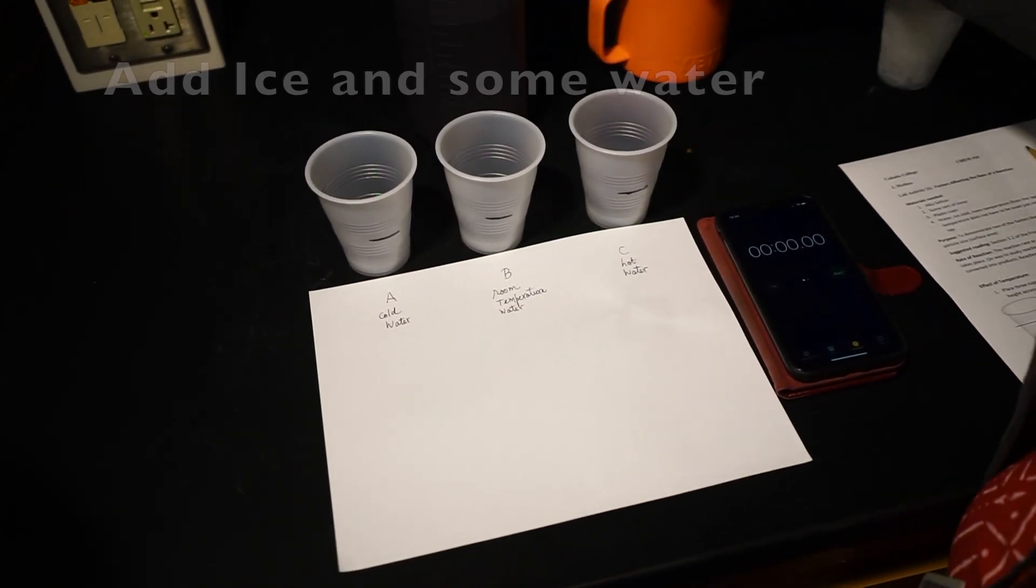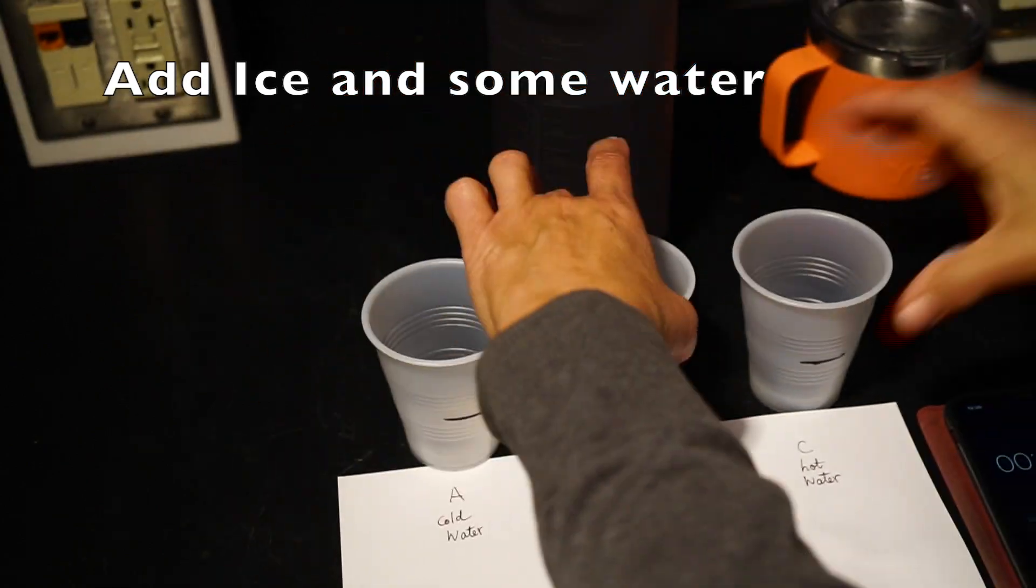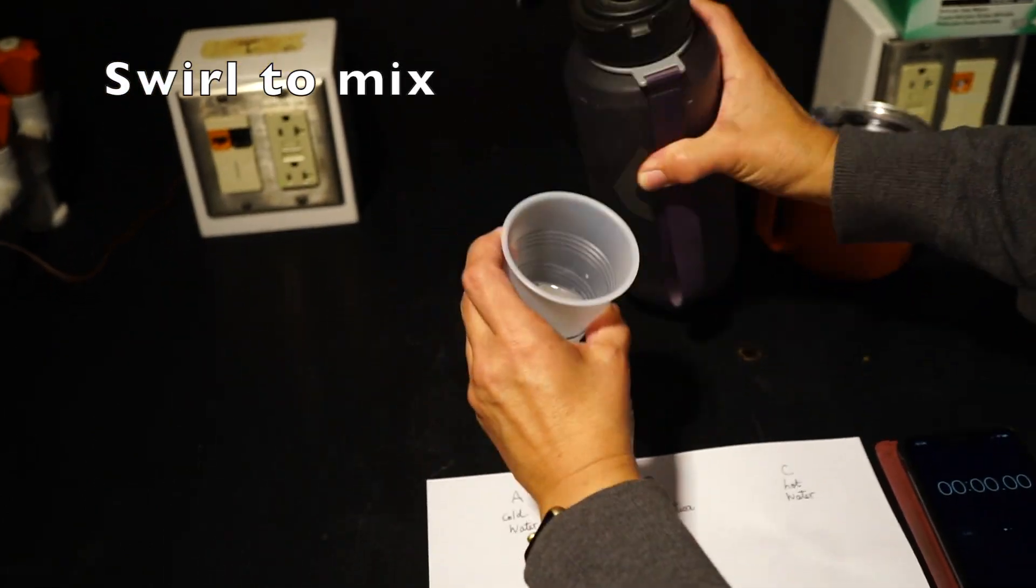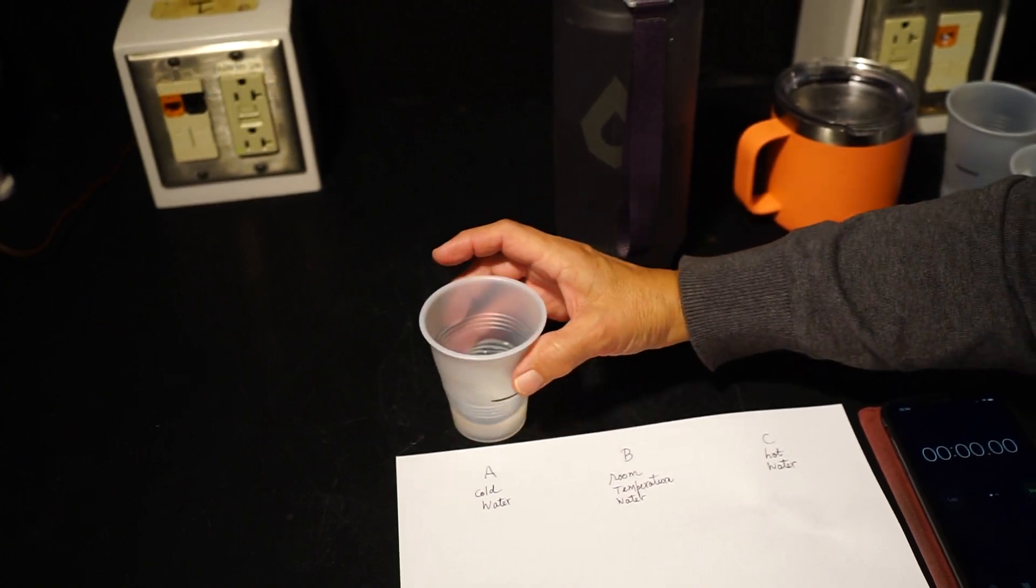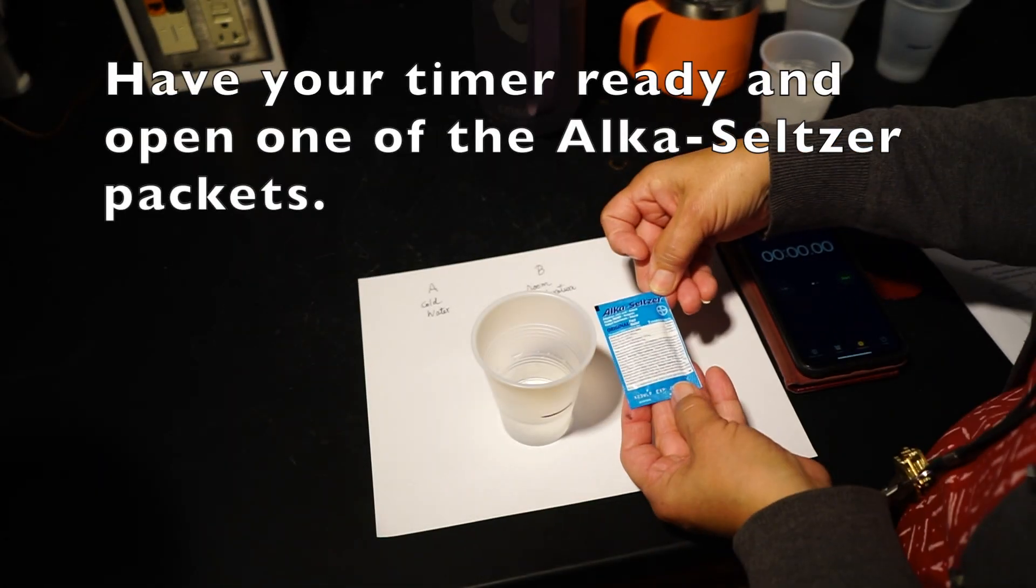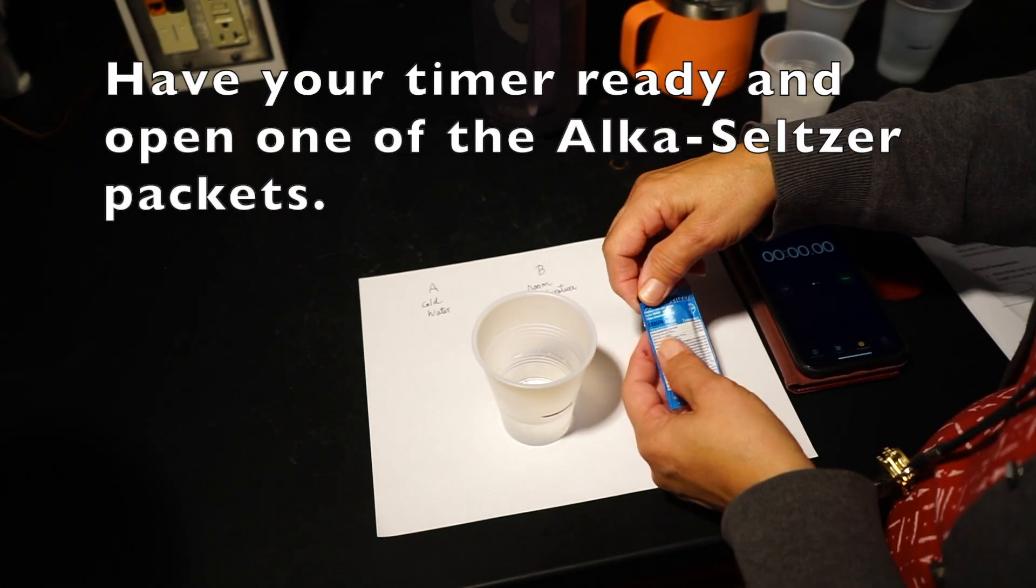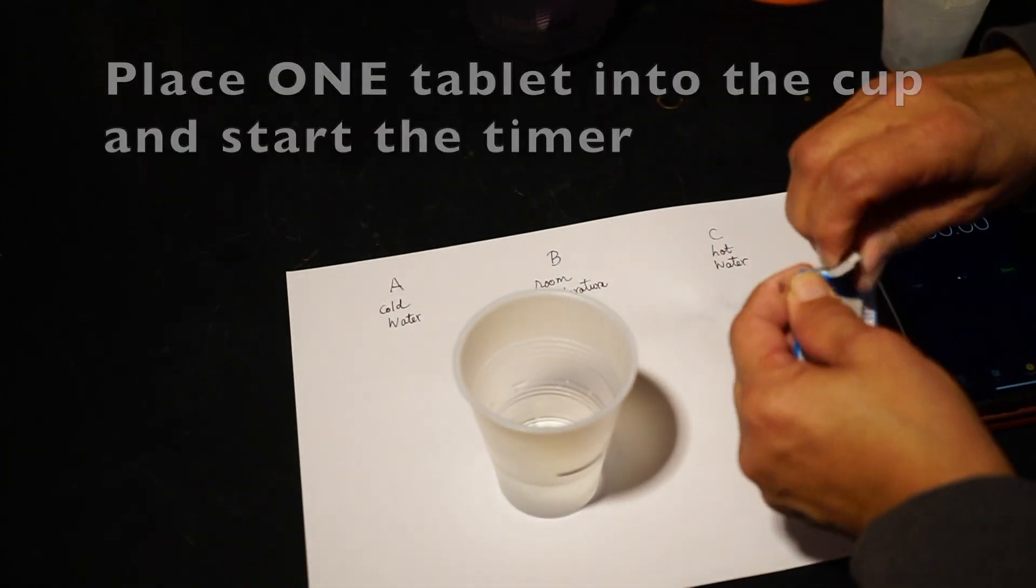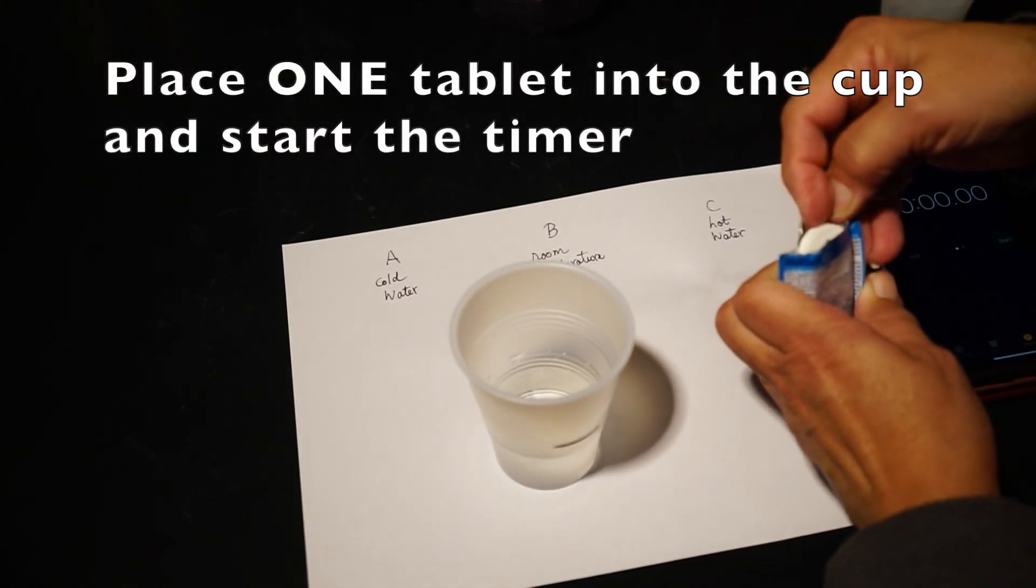Into the ice cold cup, add the ice and some water and gently swirl to mix. Have your timer ready to start recording and open the first package of Alka-Seltzer. Place one Alka-Seltzer tablet into the cold water and start the timer.